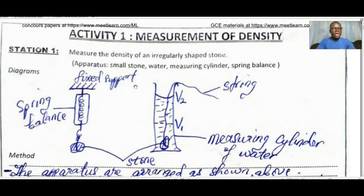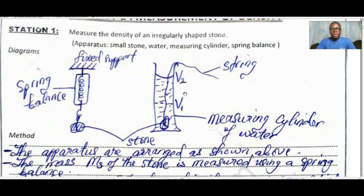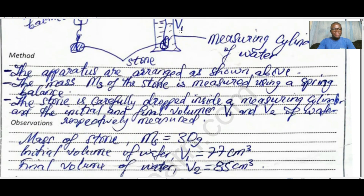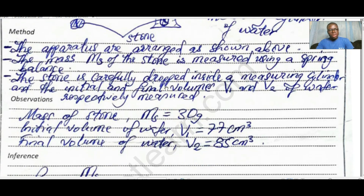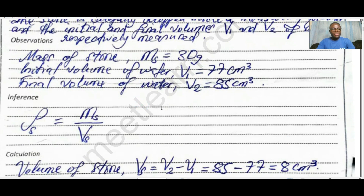The first experiment is Station 1 and we are to measure the density of an irregular object. The problem might be that you know the experiment but not how to present it — no worries, we'll handle that in this video. In any experiment you have to follow steps: first your apparatus, then a diagram or setup, the method, the observations, the inference — one of the most important aspects — and finally calculations and conclusion.